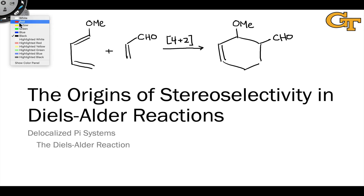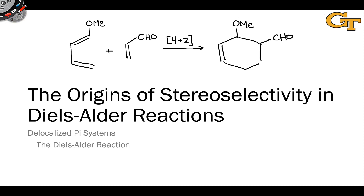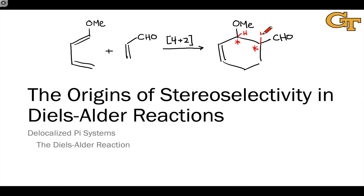One thing we haven't touched on yet is the fact that this reaction establishes two new stereocenters: one at the carbon of the dienophile bearing the aldehyde group and the other at the carbon of the diene bearing the methoxy group. We have a question about the configurations of these stereocenters, since we could end up with two possible diastereomeric products.